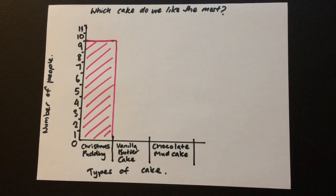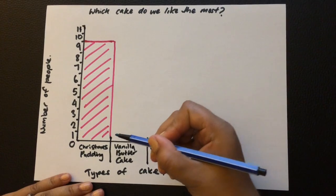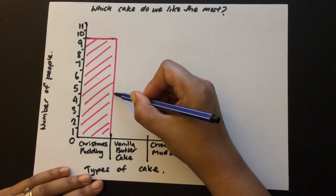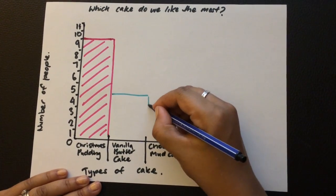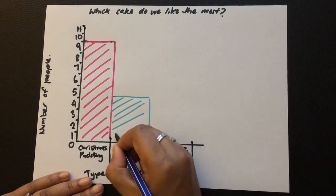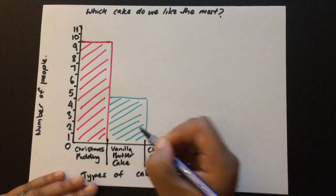Next we look at the vanilla butter cake and we see four people like that. So we go to number four, draw a line and down. You can also use your ruler if you feel it's easier. We color that in.